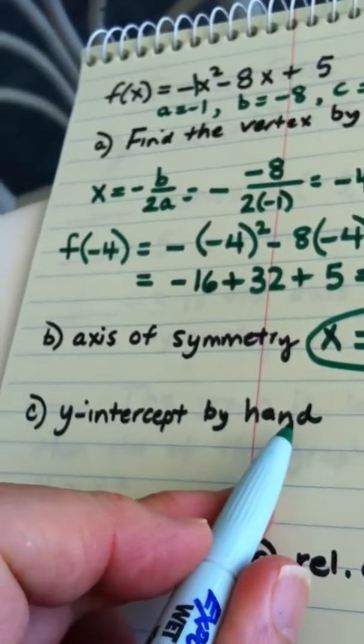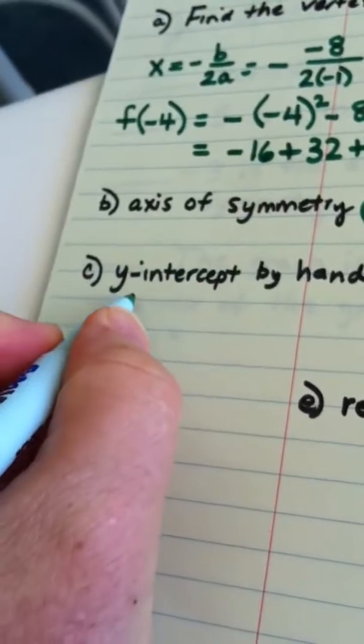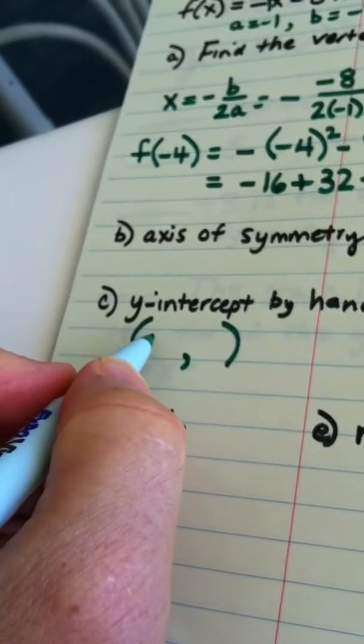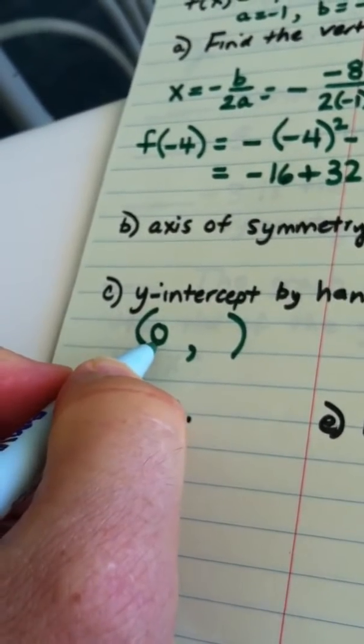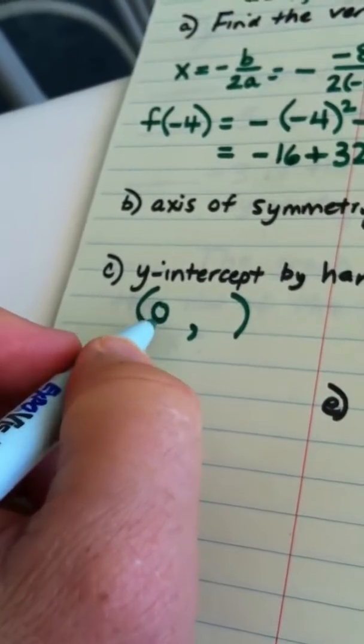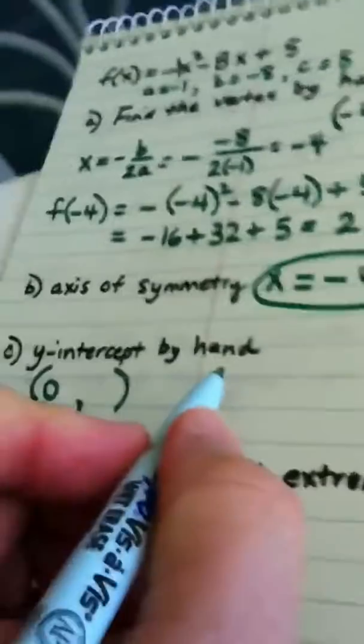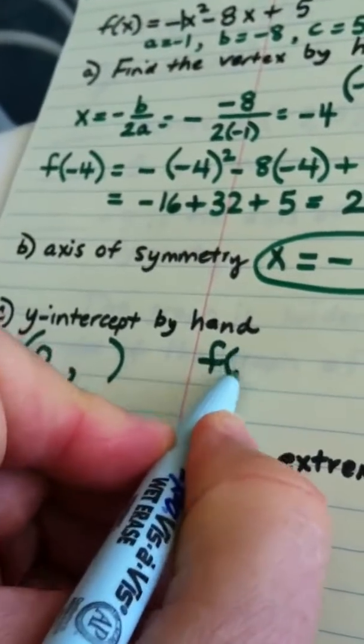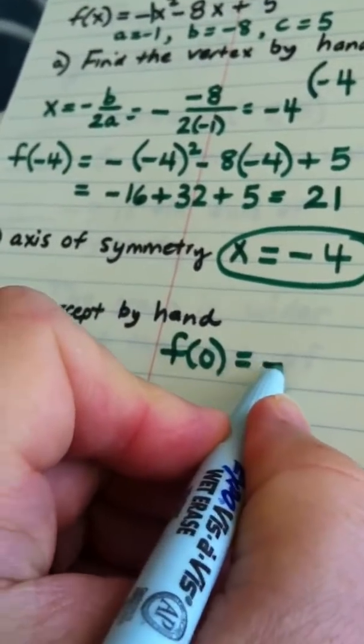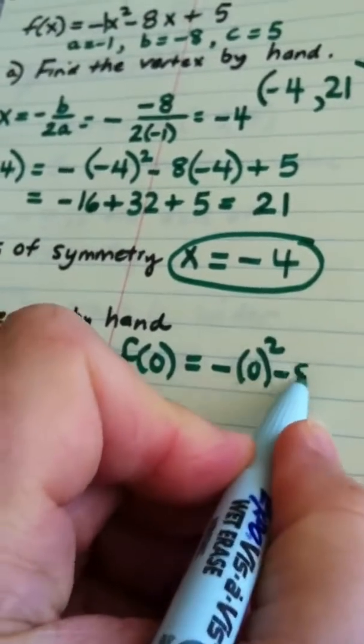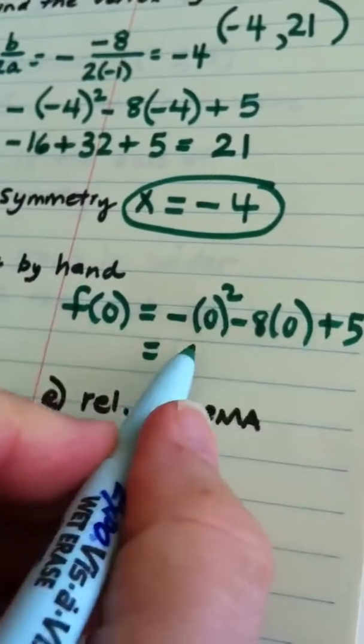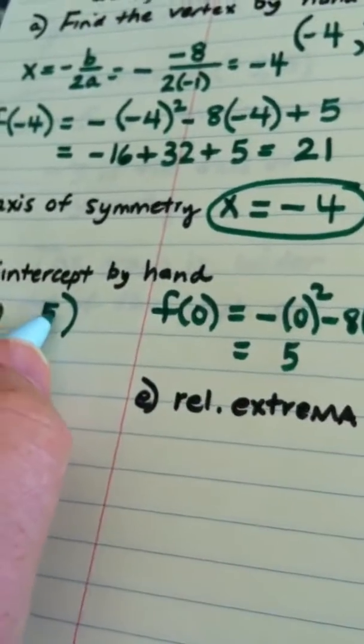When you're asked to find the y-intercept by hand, first of all remember that the y-intercept is an ordered pair. The x value of that ordered pair is always 0. So to find the y-intercept of any function you're really plugging 0 in for x. So when we find f of 0 you're always plugging in a 0 for x when you're looking for the y-intercept. You have the opposite of 0 squared minus 8 times 0 plus 5, and of course that's easy to compute. That would just be 5.